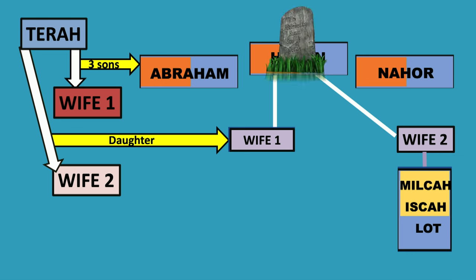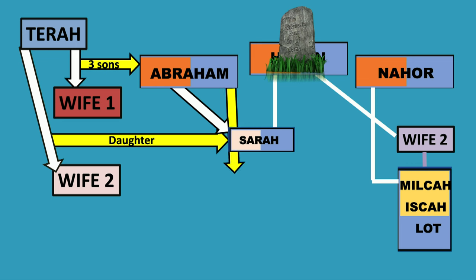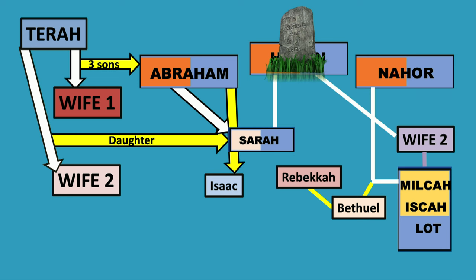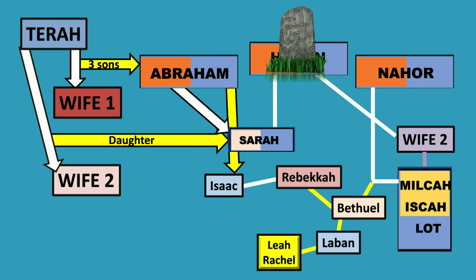Watch how this unfolds. Haran dies, so Nahor marries Milcah — the brother of Abraham. And Abraham takes Haran's other wife, who is none other than Sarah. Abraham and Sarah give birth to Isaac. Nahor and Milcah give birth to Bethuel. Bethuel has two kids — Rebecca, who marries Isaac, and Laban. Laban has Leah and Rachel. Isaac and Rebecca have Esau and Jacob, and Jacob marries Leah and Rachel.